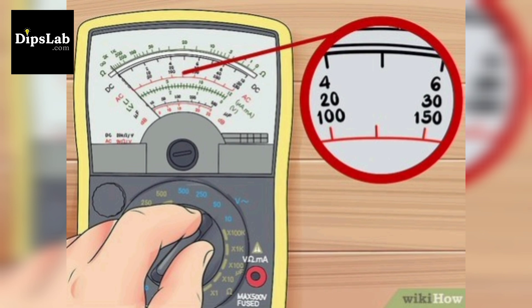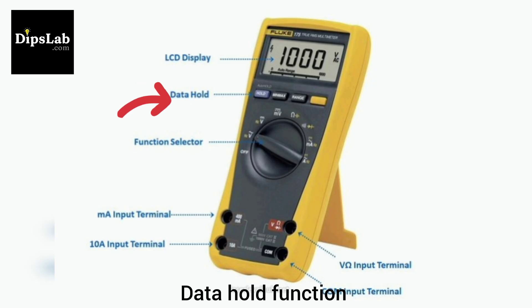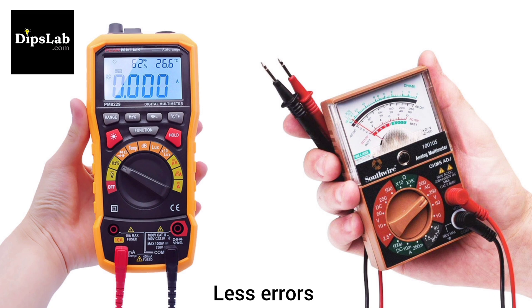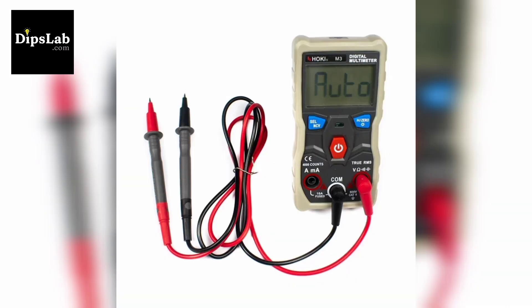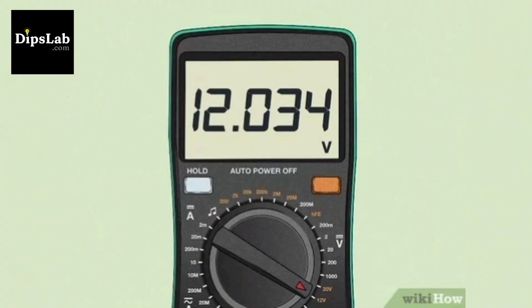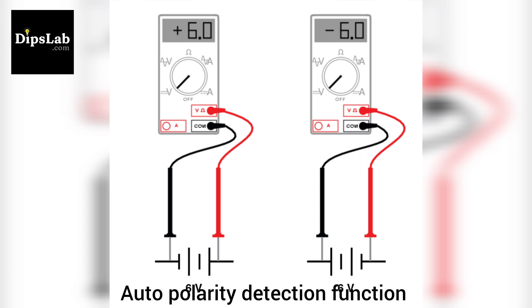Eight, in some digital meters, data hold functions are available. Nine, there could be less error as compared to the analog multimeter. Ten, the energy saving function is built-in to advanced multimeters due to automatic switching, for example, power-off functioning. Eleven, this instrument has the ability to provide automatic calibrations. Twelve, it has an auto-polarity function, so the user doesn't require a test lead to detect the polarity.